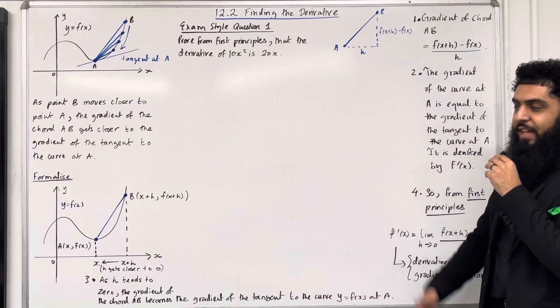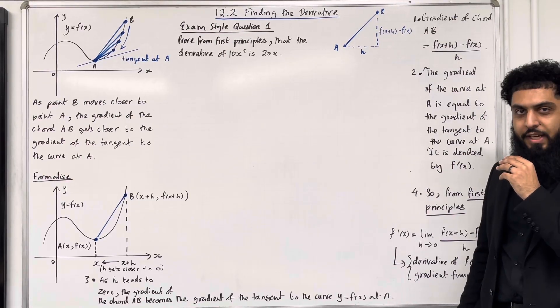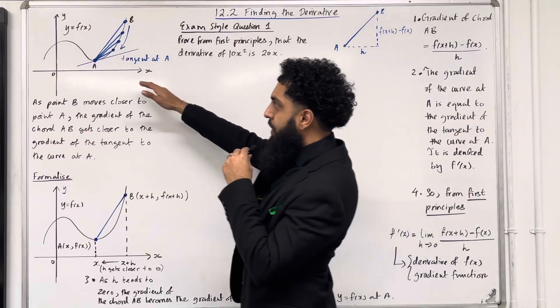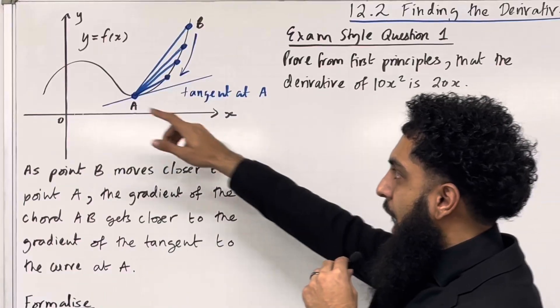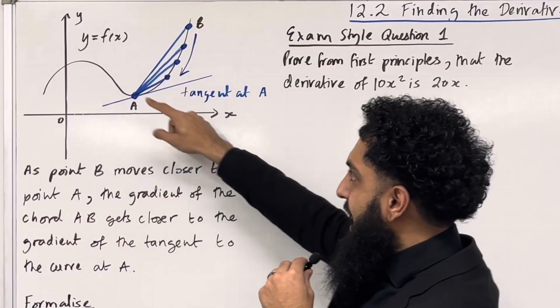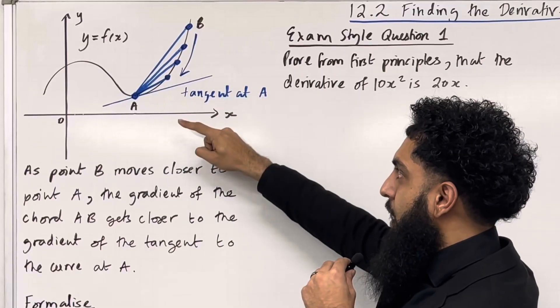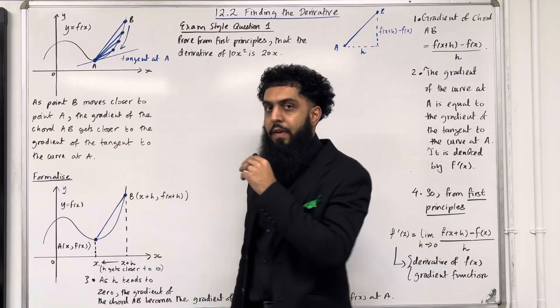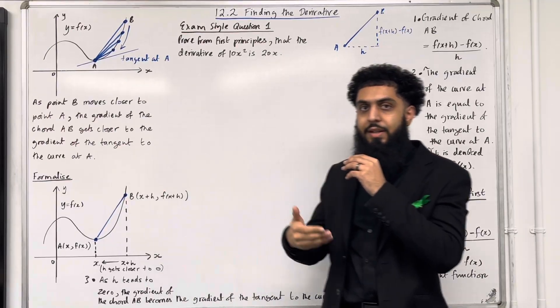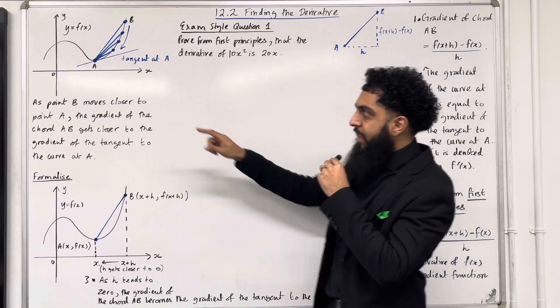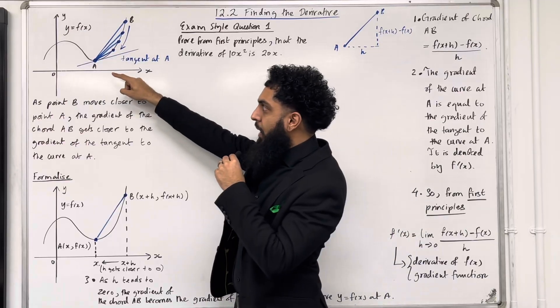Let's have a look at the key facts of this section. Consider the following coordinate grids. I've drawn the curve y equals f of x, and I've labelled the point A and the point B on the curve. Furthermore, I've drawn the tangent to the curve y equals f of x at the point A.